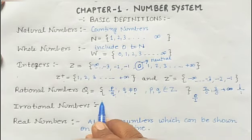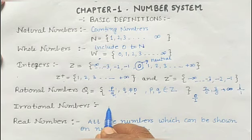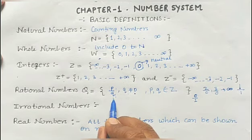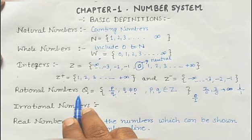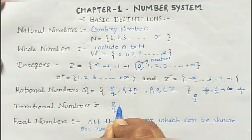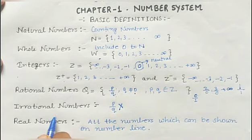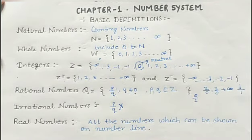Irrational numbers are the opposite of rational numbers. All numbers which cannot be written in the form of p by q are known as irrational numbers. Now, real numbers — what are real numbers?